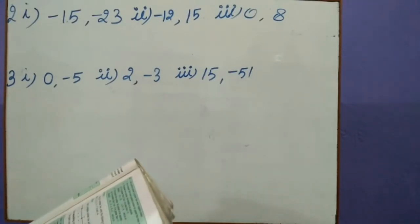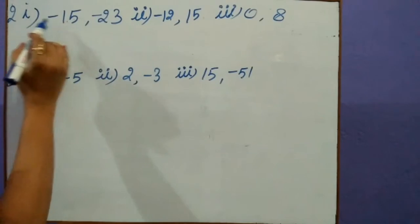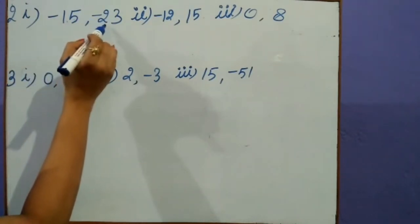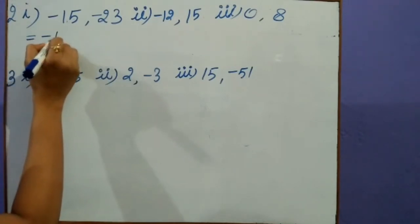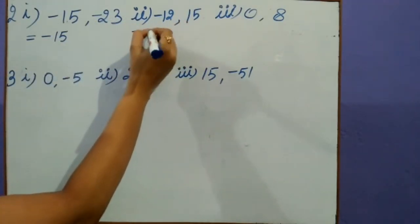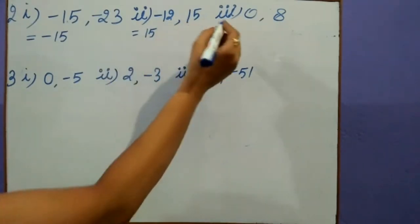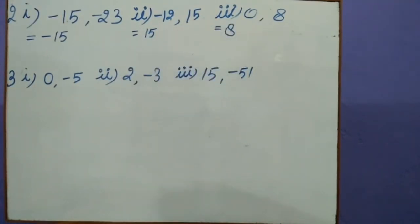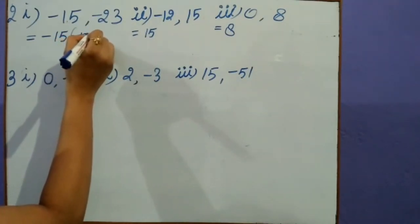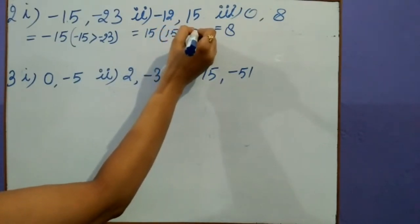Question number 2: In each of the following pairs, state which integer is greater. First one: we have to find the greater integer. We know that minus 5 is greater than minus 23, so our answer is minus 15. In this number it is very clear: 15 is greater than minus 12. In the third one: 0 and 8 — 8 is greater than 0.